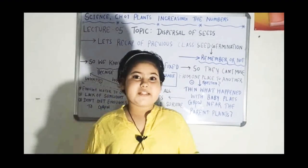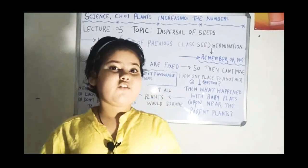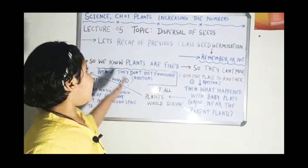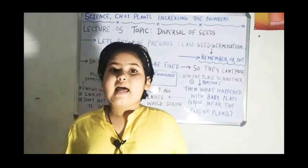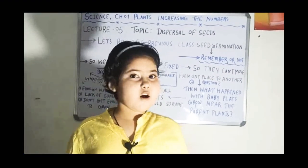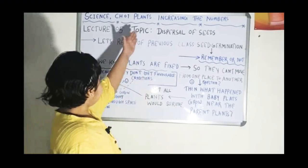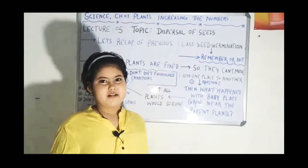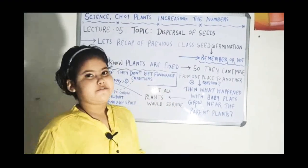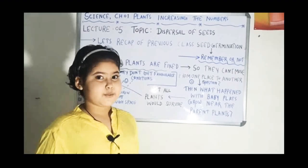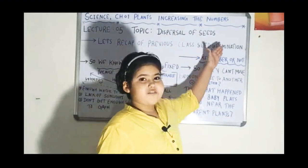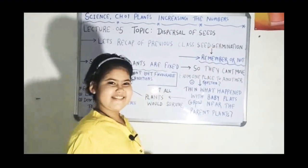Hello everyone. Today we are going to start our first chapter of Class 5th Science. The name of our chapter is 'Plants Increasing the Numbers.' This is lecture number 5 and our today's topic is dispersal of seeds.